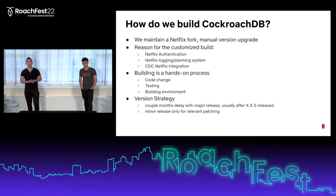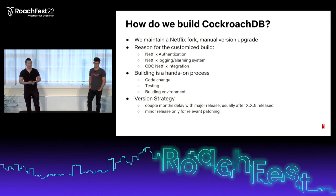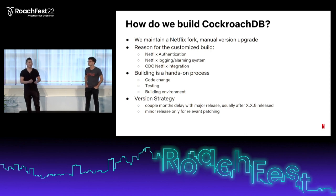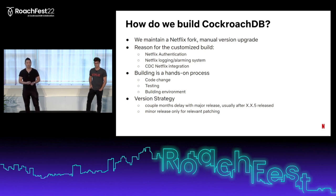Our current version strategy is not to aggressively catch up with upstream version upgrades. We wait — there are a lot of fancy features with each new release, but we want to be conservative. We're talking about 100 production clusters, so I need to be careful when releasing. Typically there's a couple of months delay unless an important customer needs a specific feature urgently. We usually wait for five minor releases, but if there's a major release with a minor patch containing a bug fix or improvement we need, we'll do that promptly.